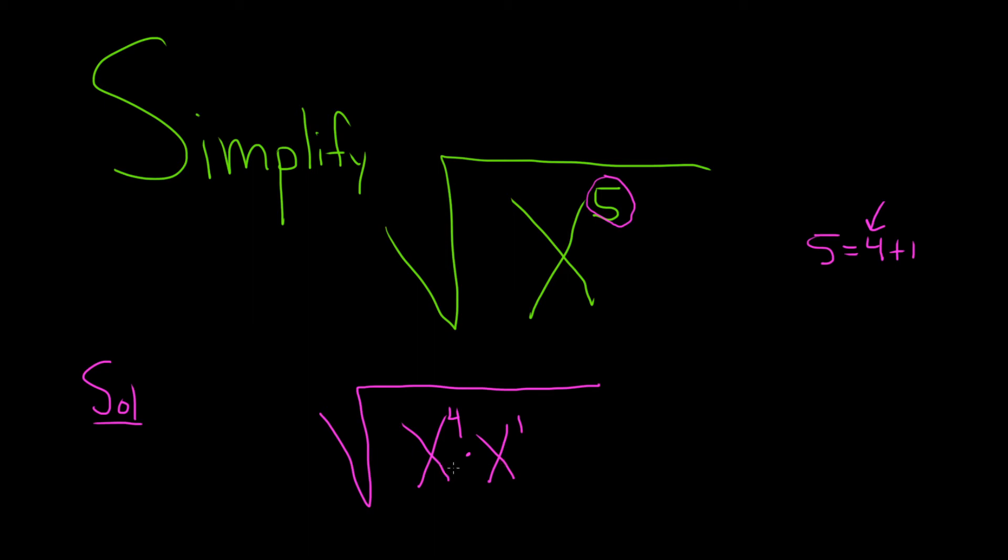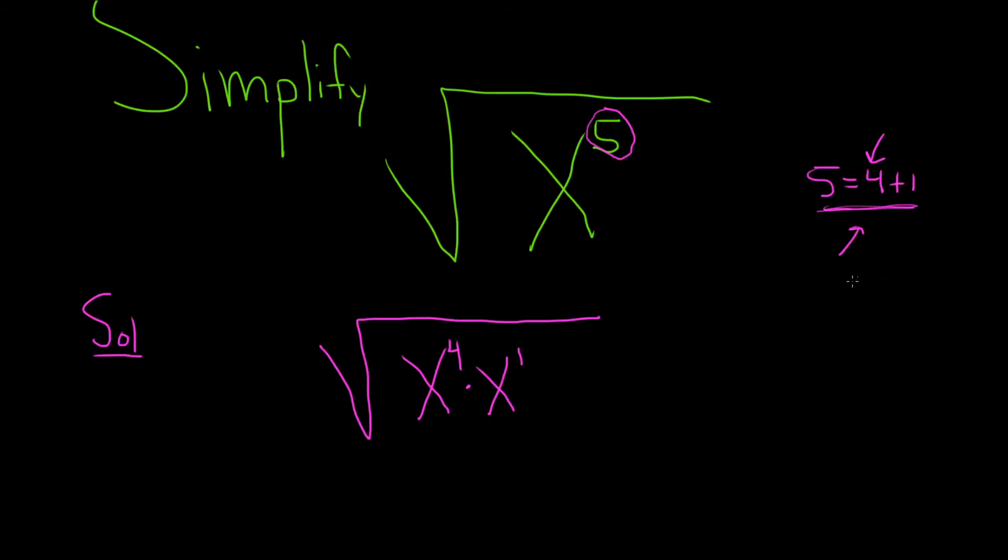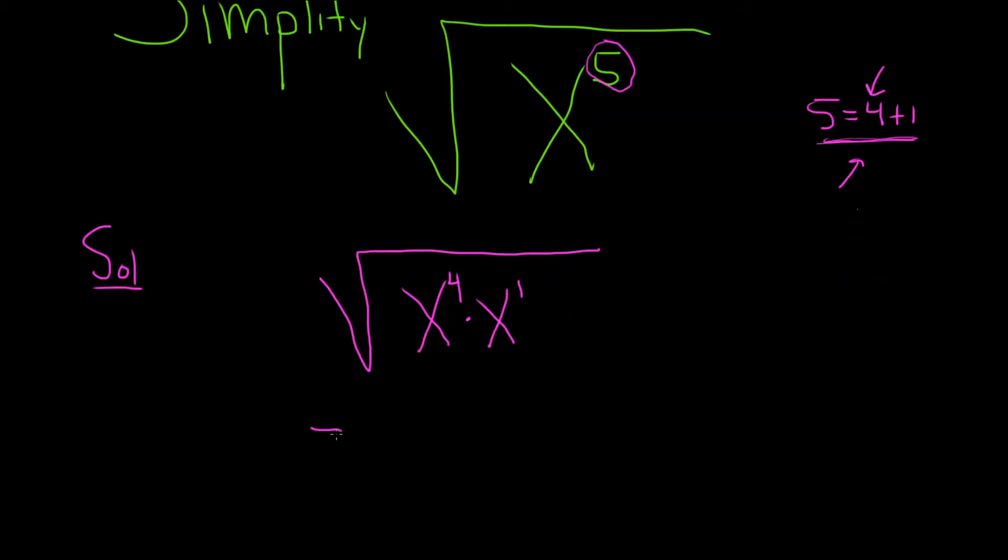And you see when you multiply here, you end up adding the exponents. That's why I did the little addition thing over here on the right. So now we can use the multiplication property, which basically says we take the square root of each piece. So you have the square root of x to the fourth times the square root of x.